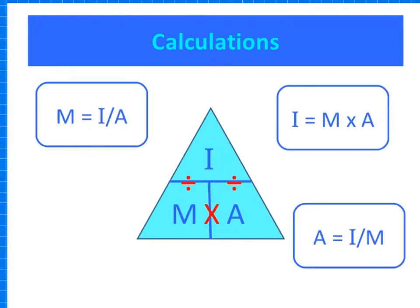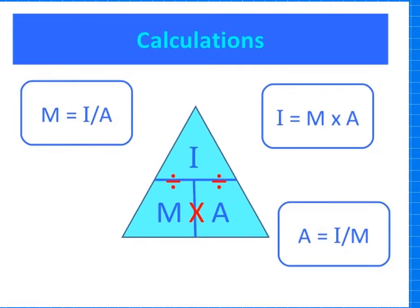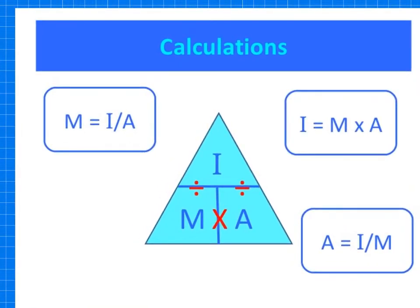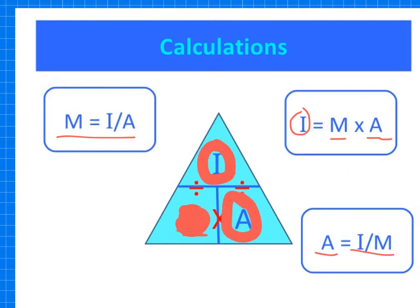To work out magnification, you take the image size divided by the actual size of the real object. If you want to find the image size, you take the magnification and times it by the size of the real object. To find the actual size, it's the image size divided by the magnification. One way I do it is, for example, if I want to find magnification, I put my finger over it on the triangle, and I know it's then that divided by that.